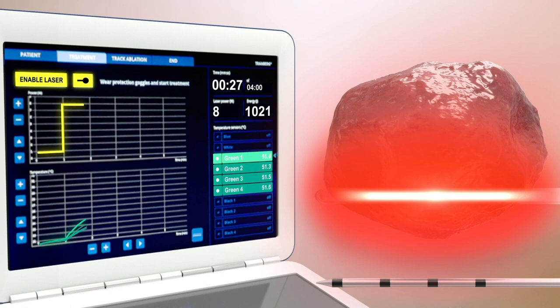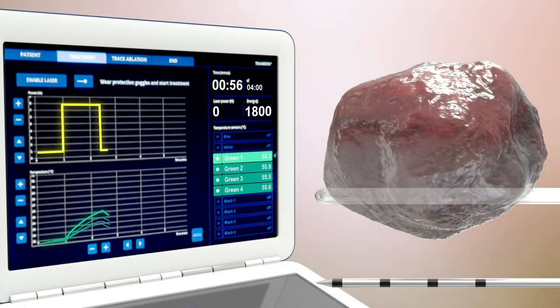Target temperatures are monitored in real-time using the temperature probes. Instant cell death is achieved at 60 degrees Celsius.